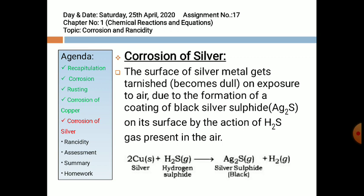Corrosion of Silver: The surface of silver objects gets tarnished — it becomes dull and loses its shine. Silver ornaments exposed to air acquire a black coating due to the formation of black silver sulfide, Ag₂S, caused by the action of hydrogen sulfide gas (H₂S) present in air. The equation is: Ag + H₂S → Ag₂S (black) + H₂.